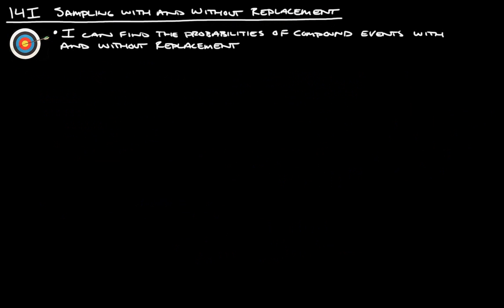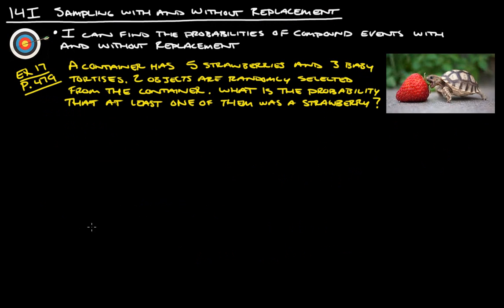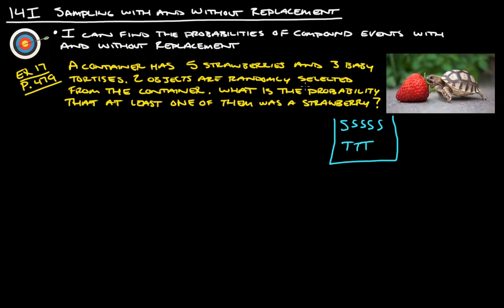Let's do one more example. This is example 17 from page 479. A container has five strawberries and three baby tortoises. Two objects are randomly selected from the container. What's the probability that at least one of them is a strawberry? We have five strawberries and three tortoises. Since two objects are taken out and set aside, this is without replacement.